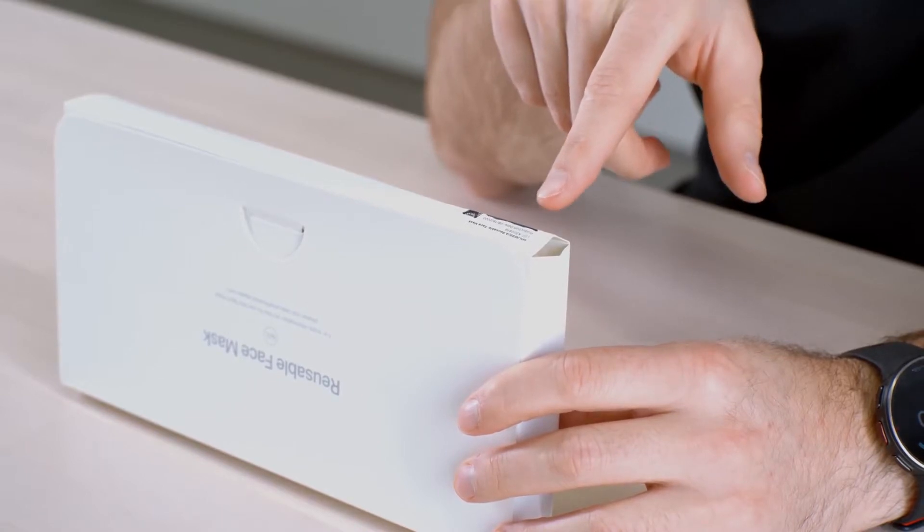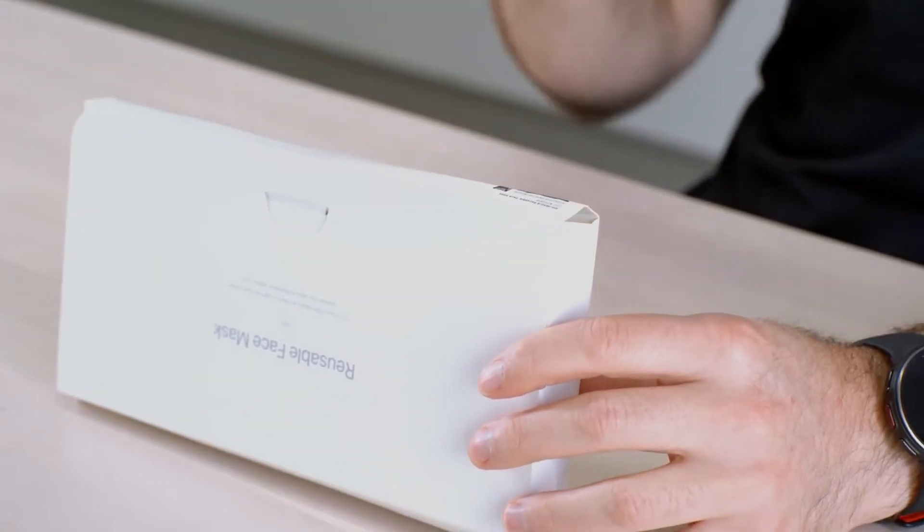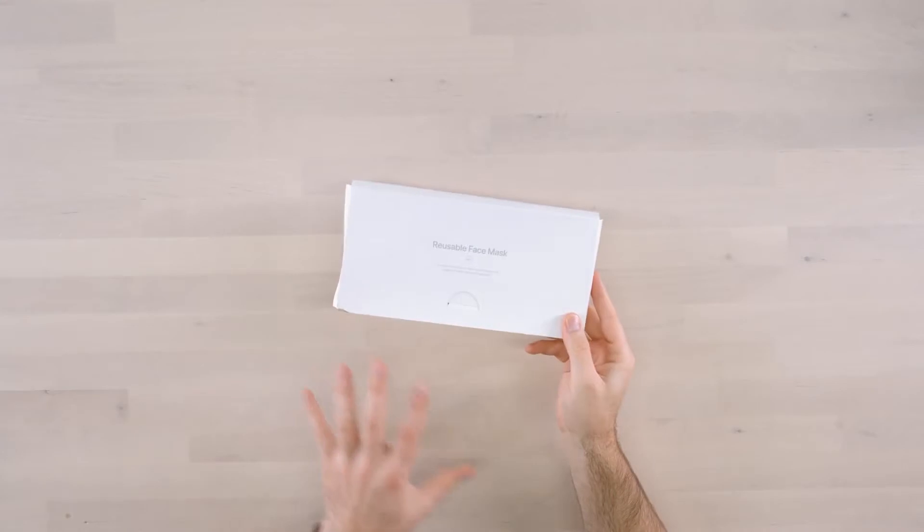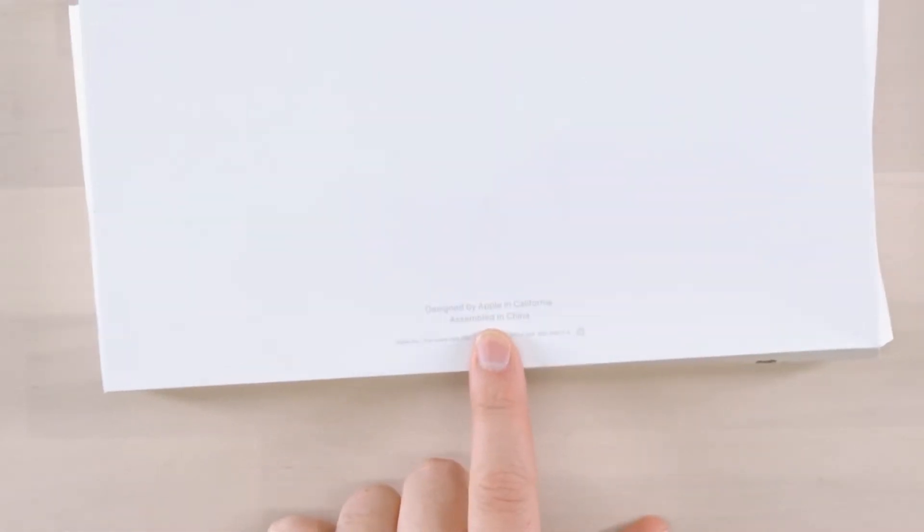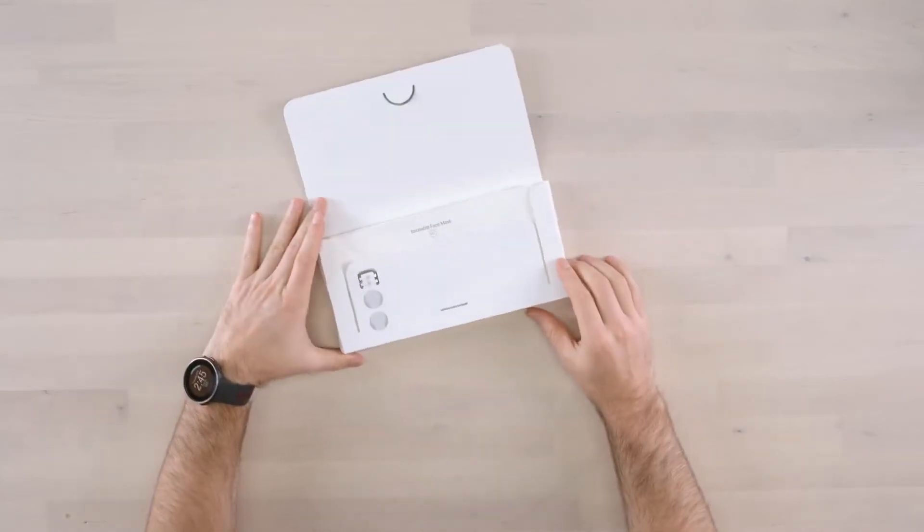Just like everything else Apple, tremendously detailed stuff over here and an unboxing experience that looks like it's kind of beyond what you would expect for a reusable face mask. Even on the back, designed by Apple in California, assembled in China. You've got to get that in there on every single Apple product. This has to be one of the most unusual Apple unboxing videos I've ever done.